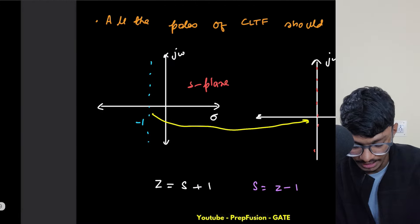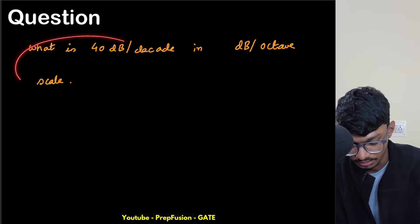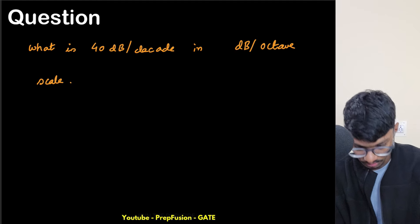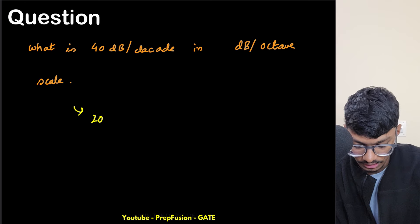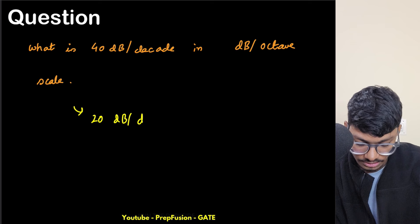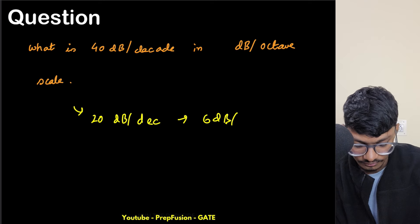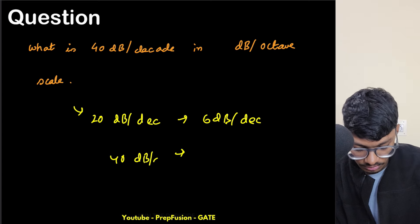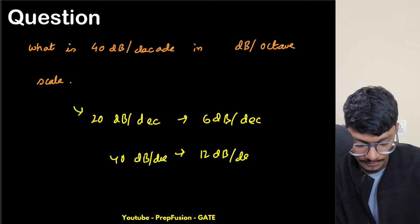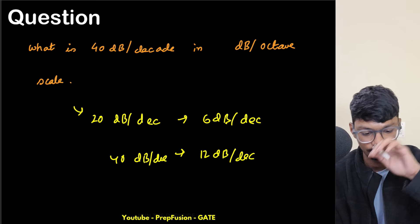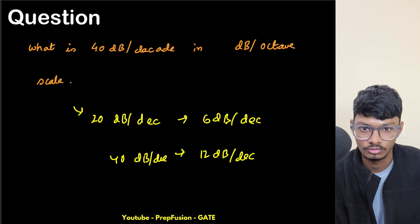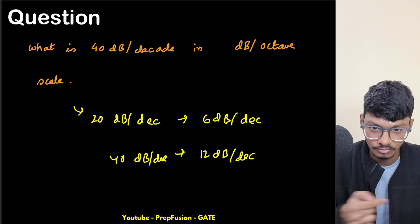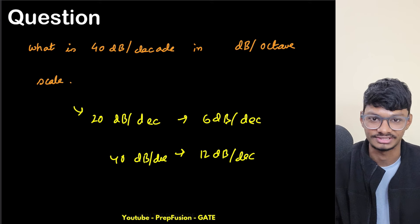So the answer is k in the range (-6, 6). There was also another simple question: what is 40 dB/decade in dB/octave? Just remember that 20 dB/decade equals 6 dB/octave, so 40 dB/decade equals 12 dB/octave. You can also derive this by converting from log base 10 to log base 2 scale. If you find more questions, send them in, hit the like button if you liked the solution — thank you for watching.